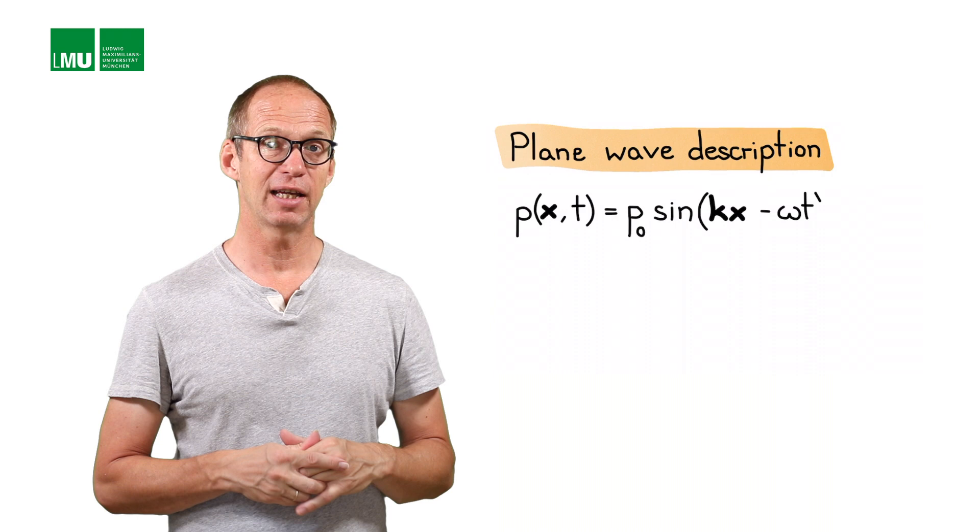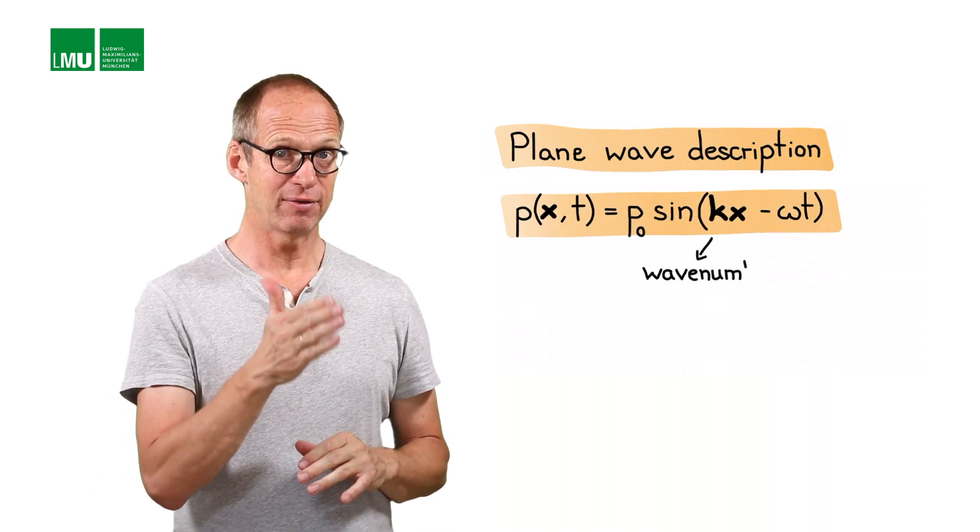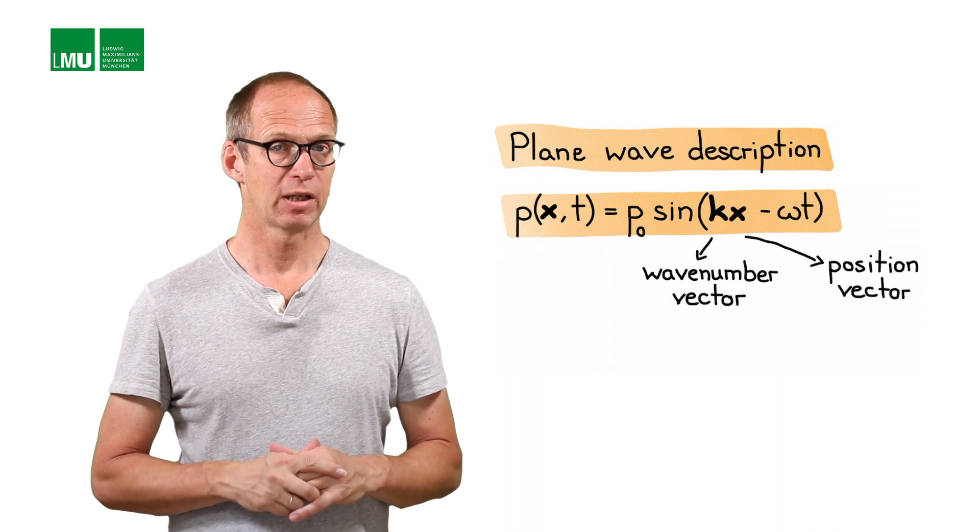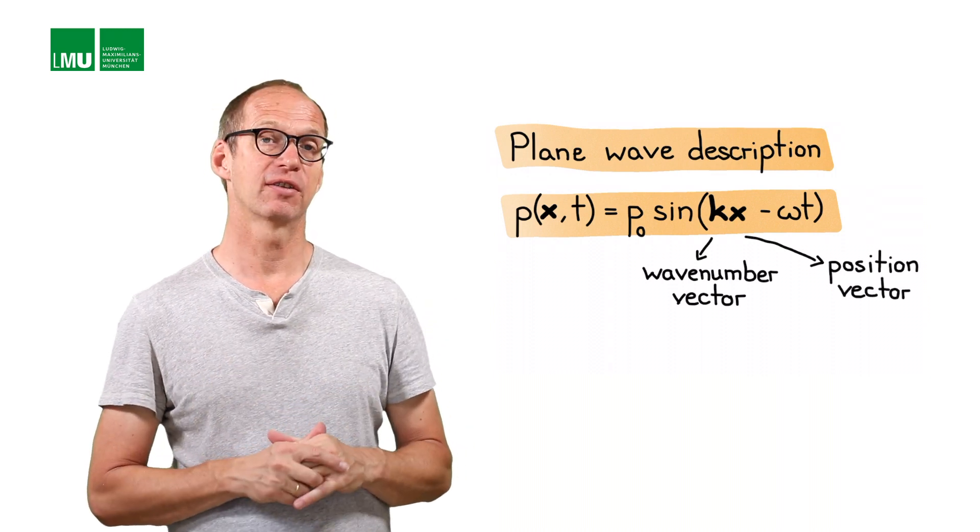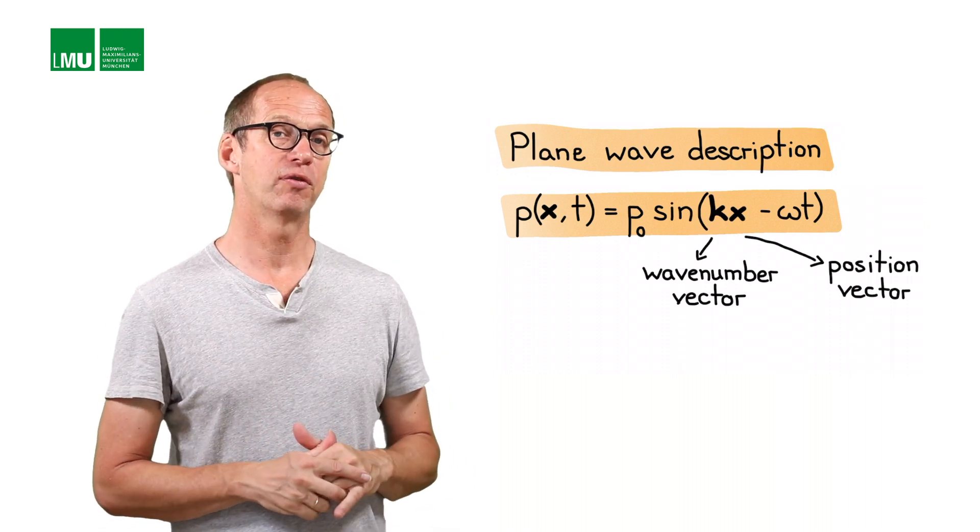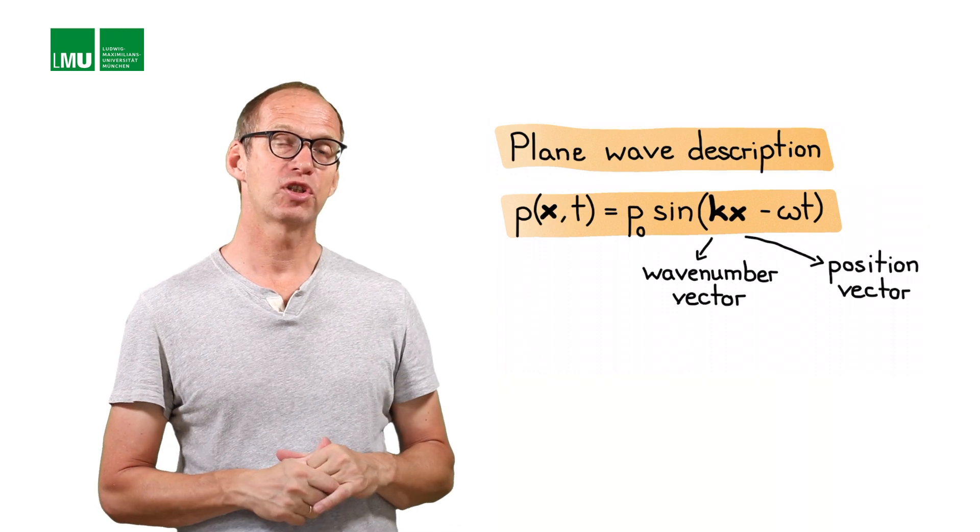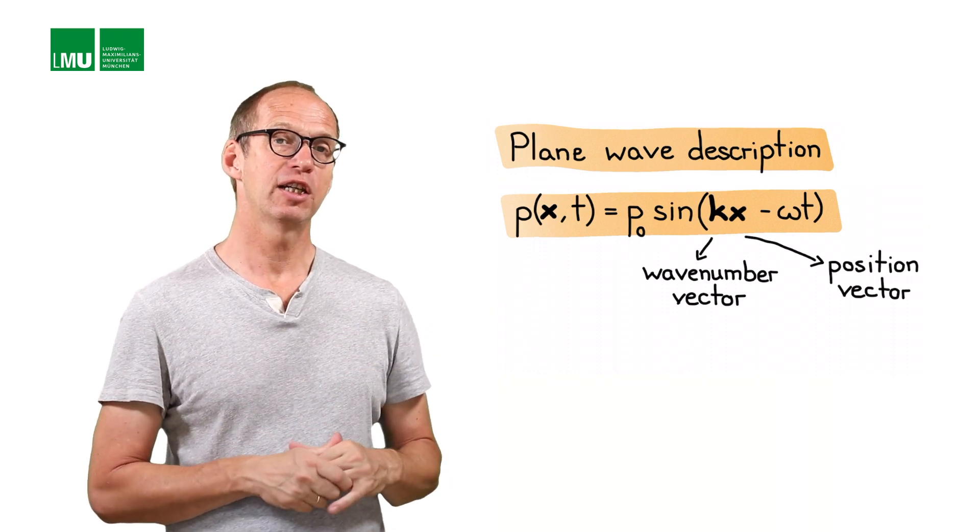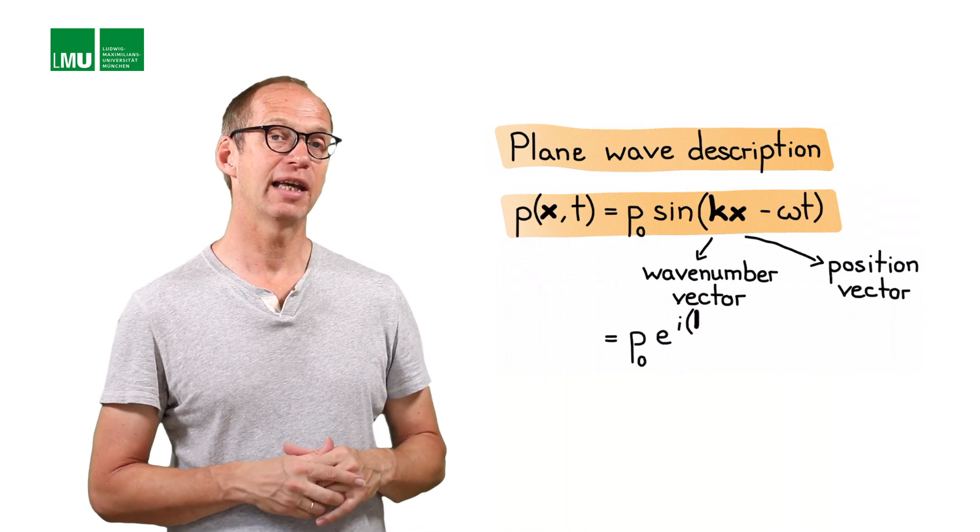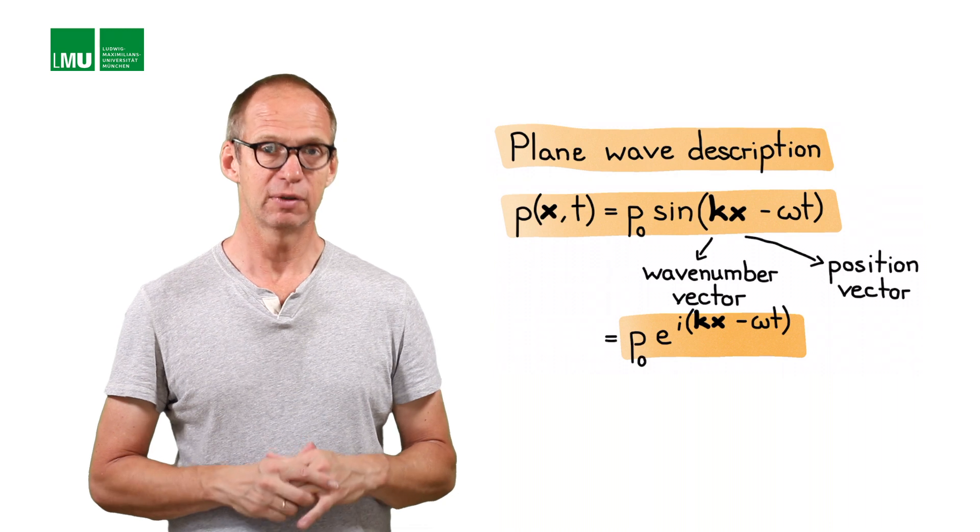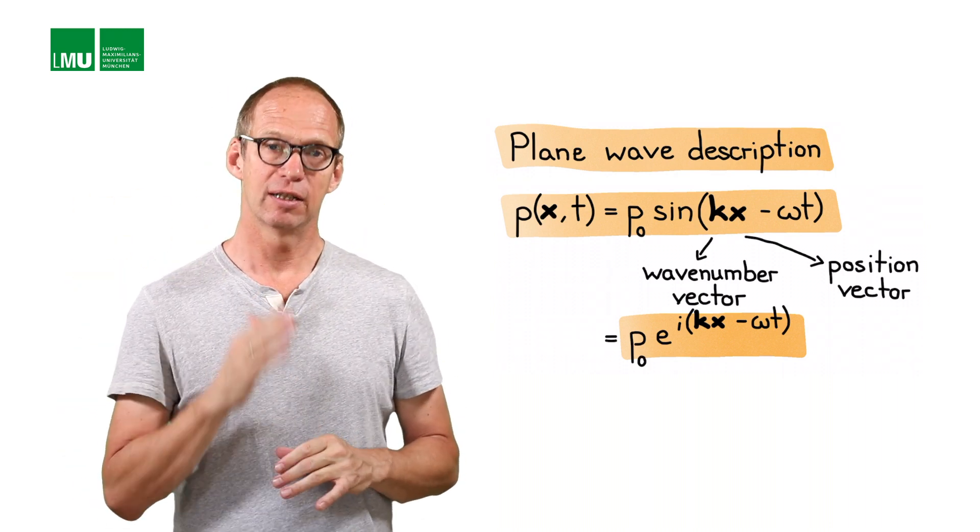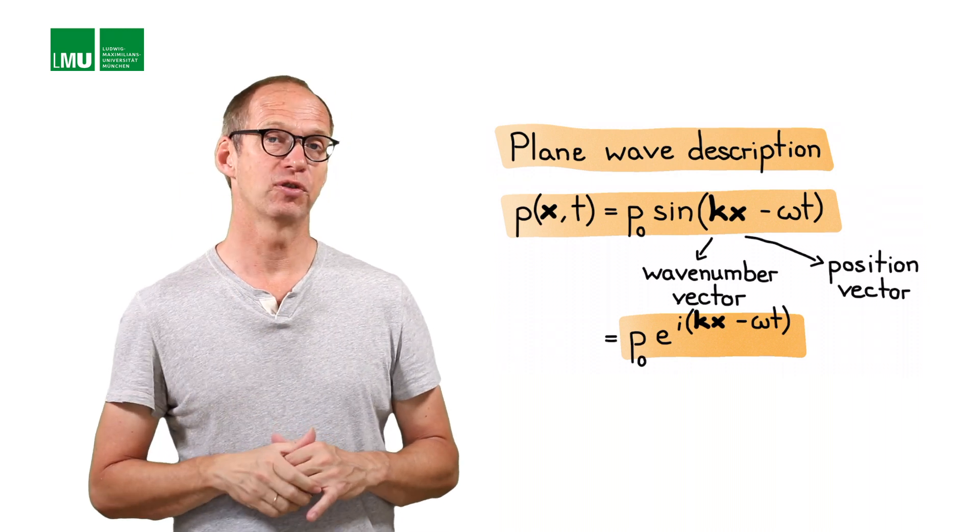If you think of a pressure, a plane pressure wave, this would be characterized as p is equal to p0, which is an amplitude, multiplying, for example, sin kx, where k is a vector, x is a position vector, minus omega t. It could also be a cosine replacing the sine, or a combination of both. We also often make use of the exponential form, in which case we would write p equals p0 e to the i kx minus omega t.